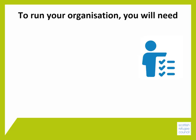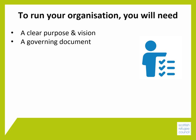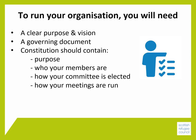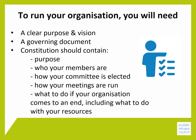To run your organisation, you will need a clear purpose and vision — there's a whole section about this in this module — and a set of rules about how your organisation will be run, known as the governing document, with the most common being a constitution. Your constitution should include your purpose, who your members are and how they join, how your committee is elected and how your meetings are run, and also what to do if your organisation comes to an end, particularly regarding any resources and whether they can go to another organisation with similar aims.